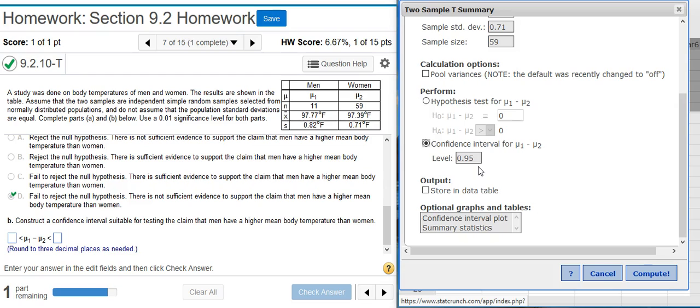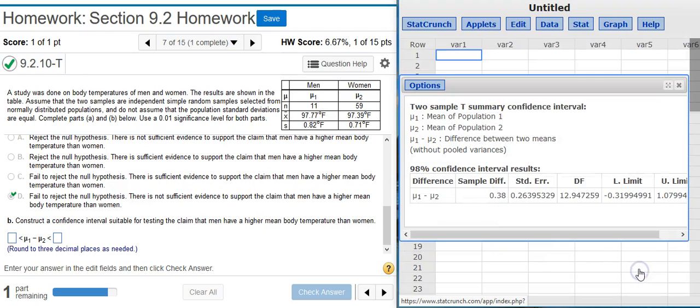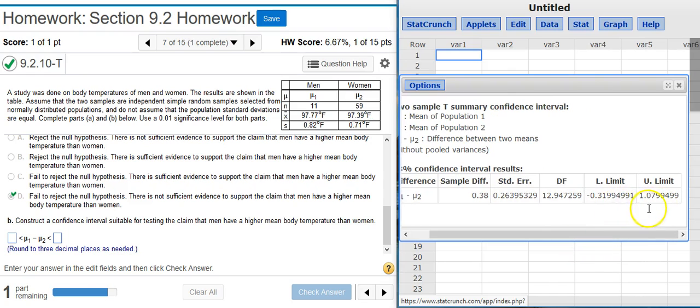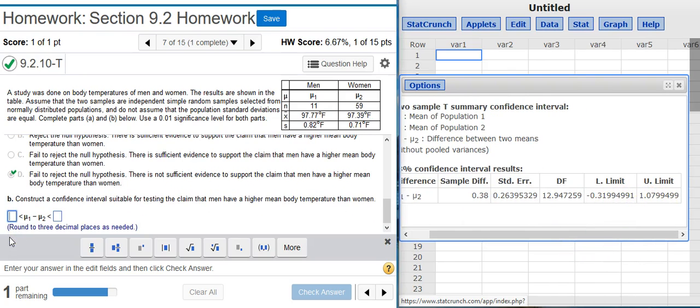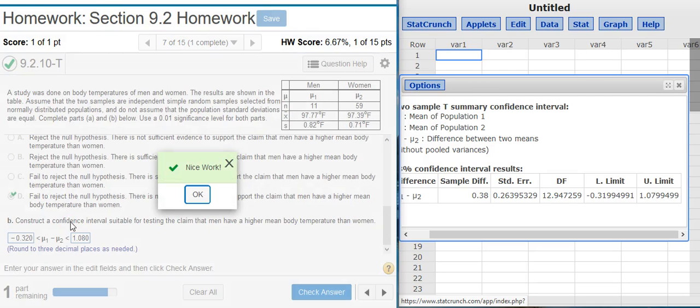However, in this case, we have two independent samples. So the complement we are looking for is not 1 minus alpha, but 1 minus 2 alpha. So we take twice the alpha to give us 2%, and we subtract that from 100% to give us the appropriate level for our confidence interval. We do this because we are looking at the difference between two independent samples and not just one sample. Hit Compute, and now we have upper and lower limits for our confidence interval. Nice work!